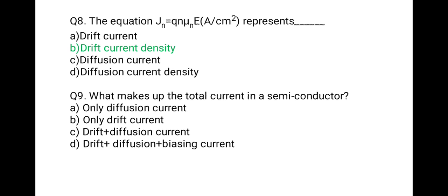Question 9: What makes up the total current in a semiconductor? The total current in a semiconductor is due to drift plus diffusion. The correct answer is C.